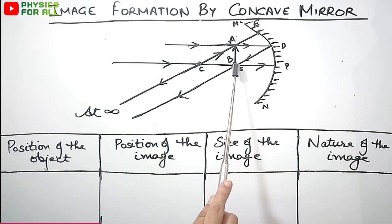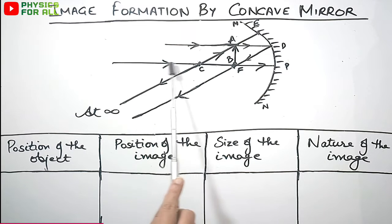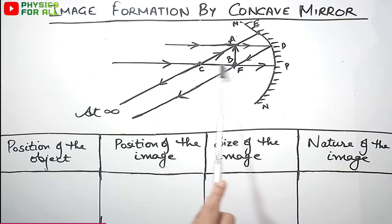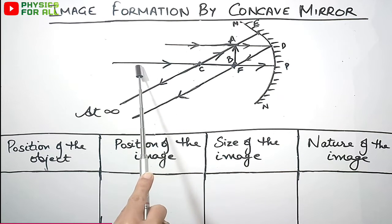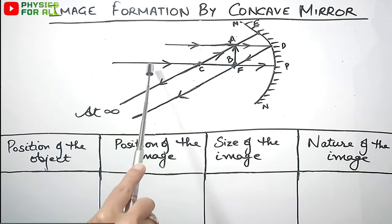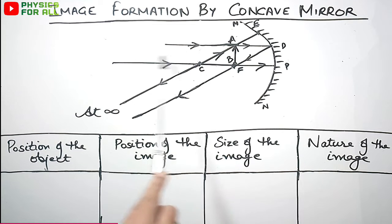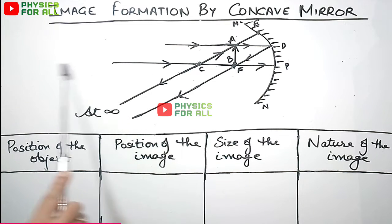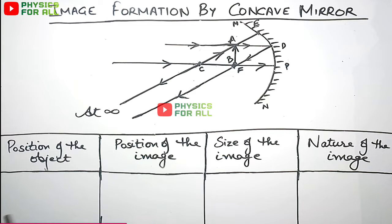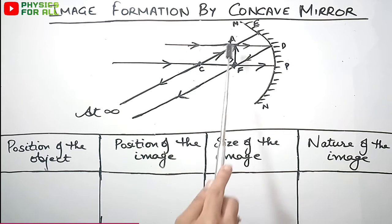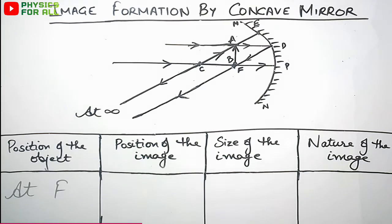We always consider the base of the object to be on the principal axis, because the rays passing through the principal axis touch the bottom of the object. So the image's base will also be on the principal axis. The head of the image lies where the two rays intersect — at that infinite distance.